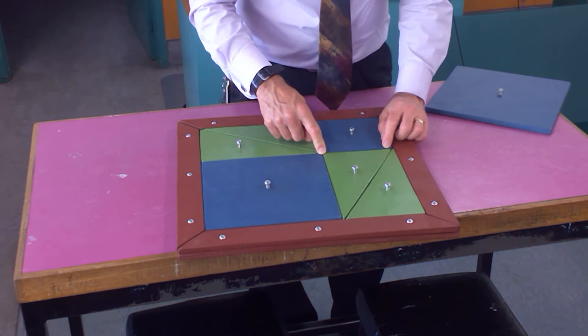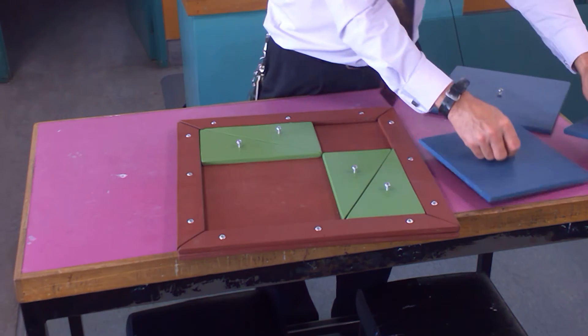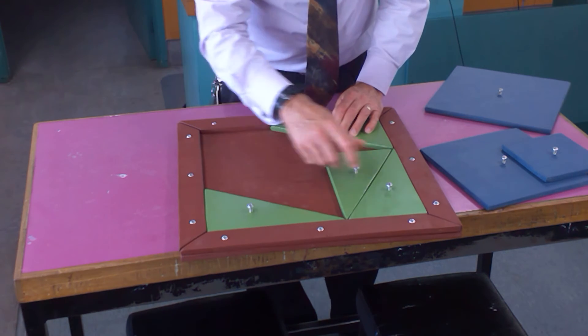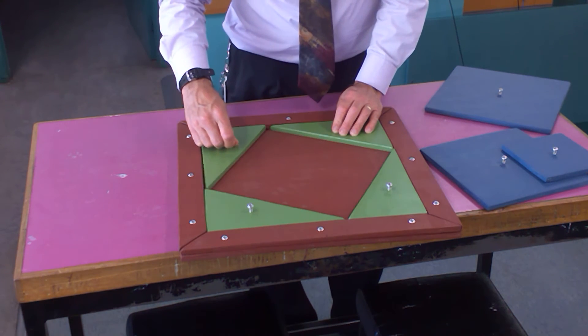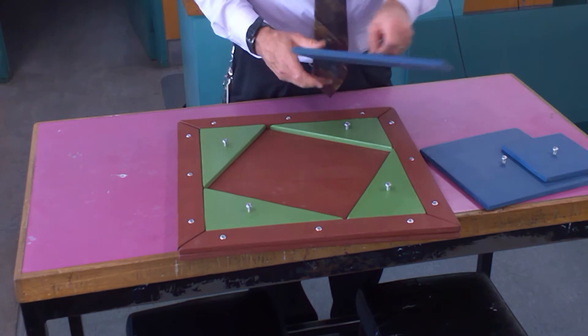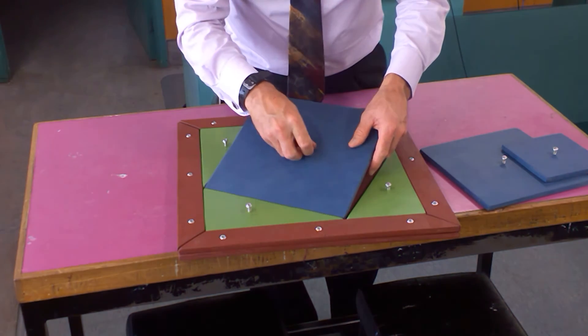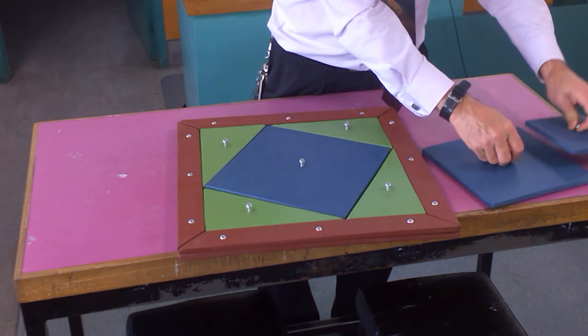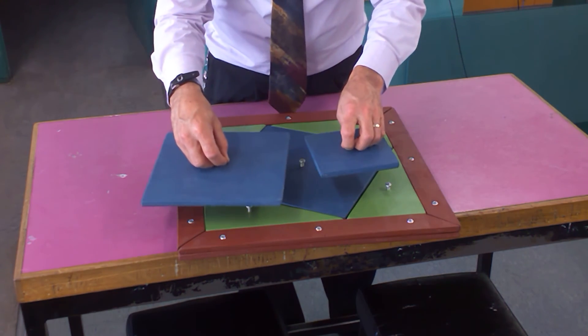But take these out and readjust these triangles, and the square on the hypotenuse, which is this side here, also fills the tray just as effectively as these two do. It's a beautiful proof.